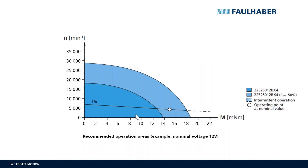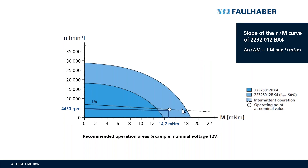The white point here shows the operating point at nominal values. Remember, this is 14.7 millinewton meter rated torque and 4450 rpm. The point is in the light blue area, so cooling is required to reach this point. The slope of the nominal voltage curve — this slope here — shows how powerful a motor is.